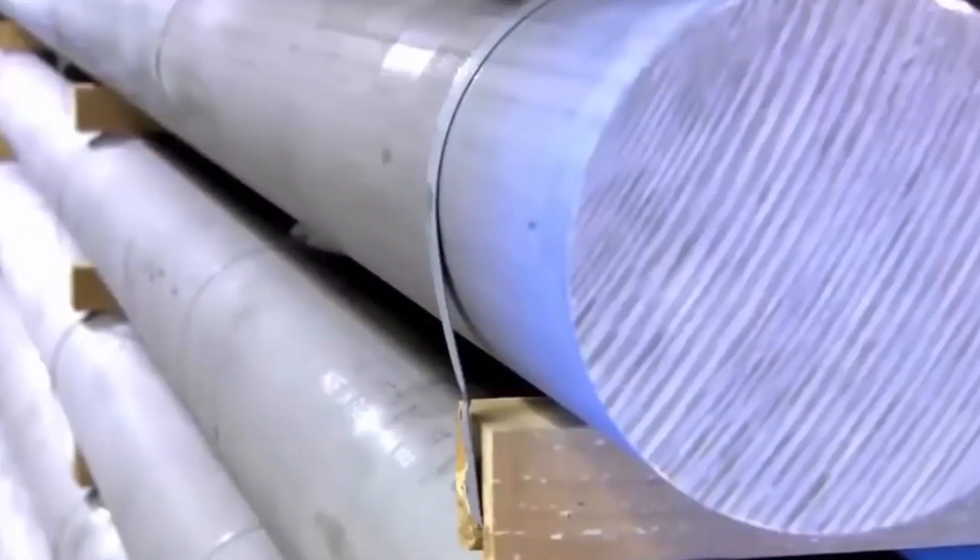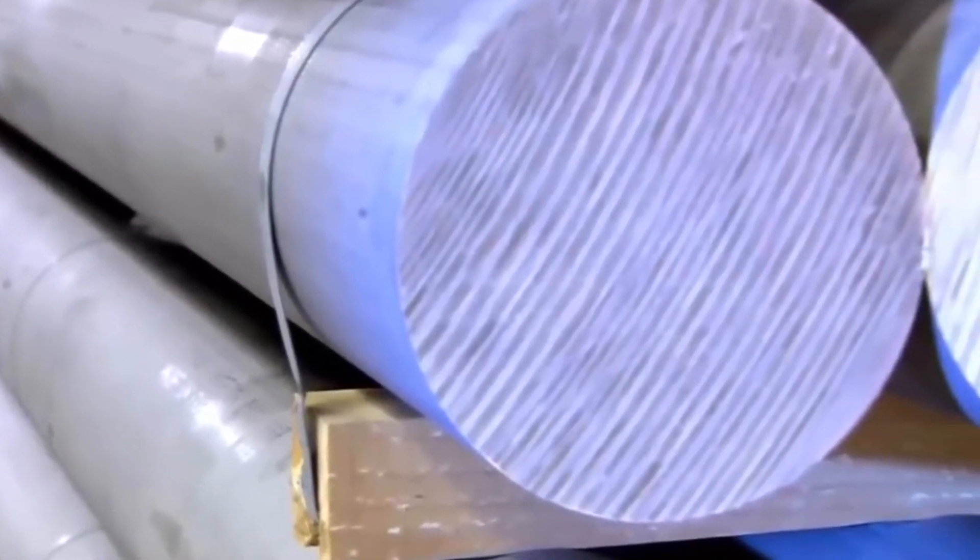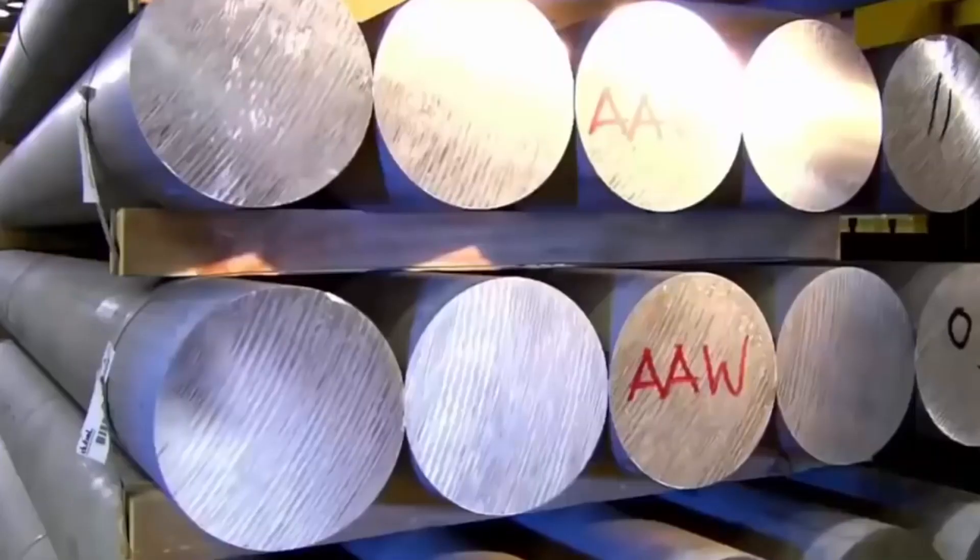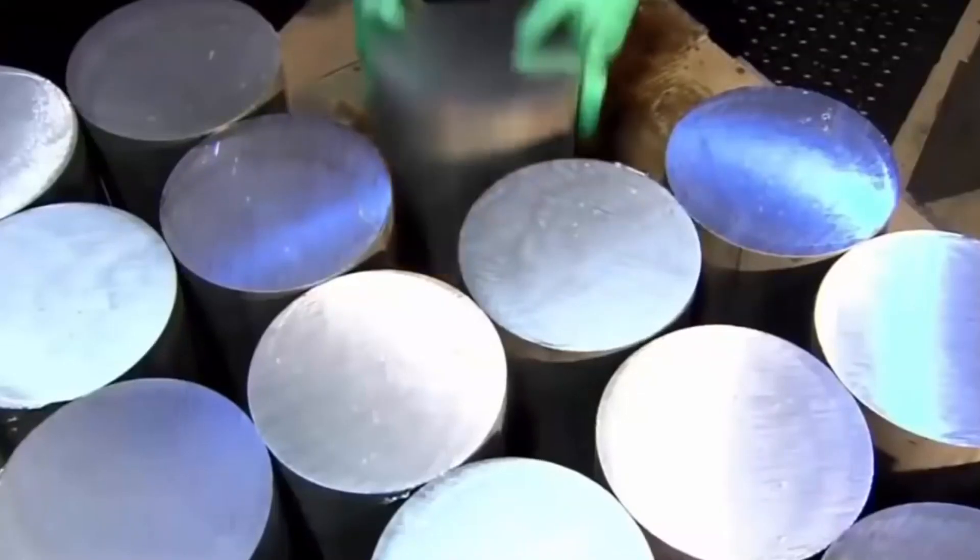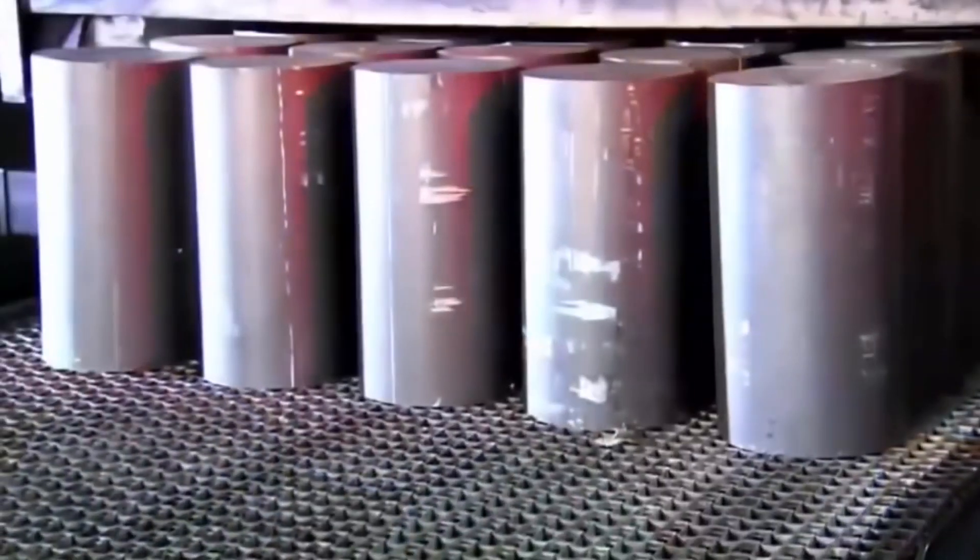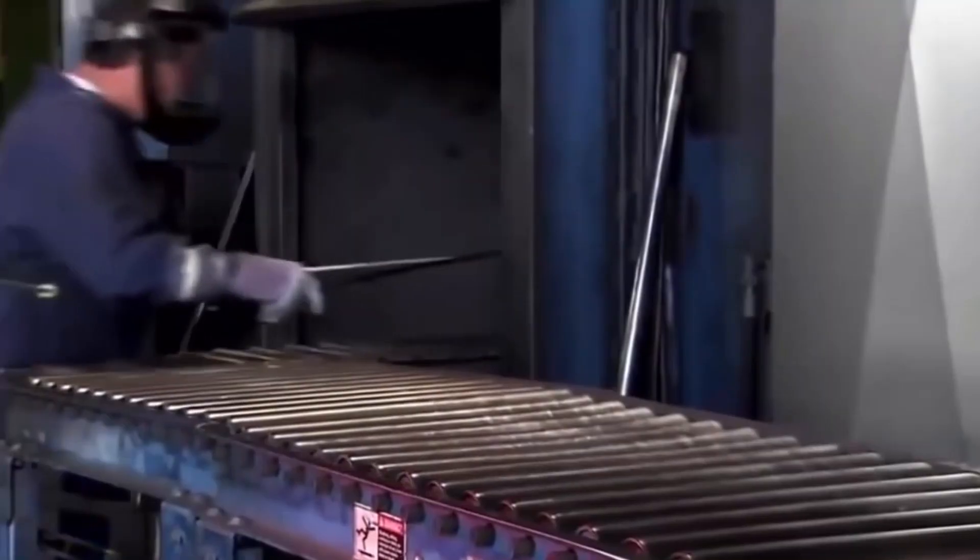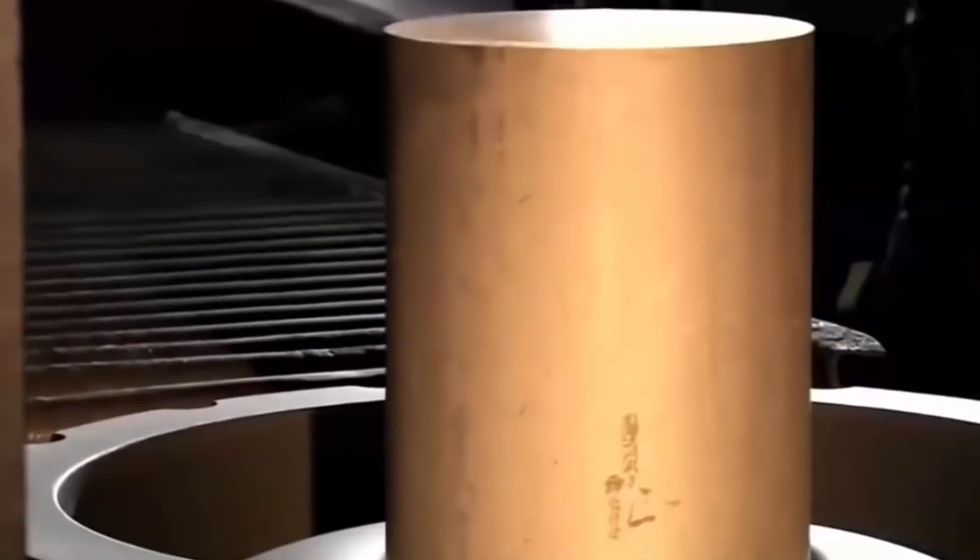Alloys: Thorium is used as an alloying element in various metals, including magnesium and aluminum alloys. These thorium-containing alloys exhibit improved mechanical properties such as increased strength and heat resistance, making them valuable in aerospace and automotive applications.